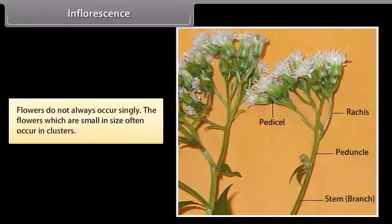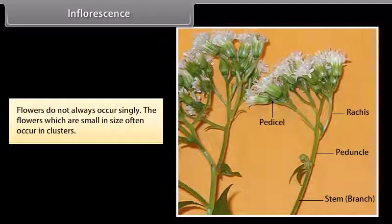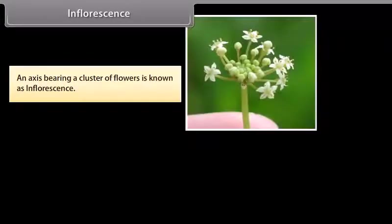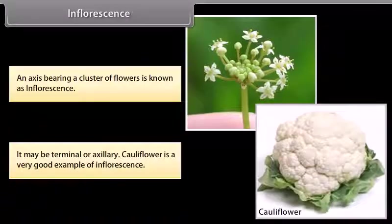Flowers do not always occur singly. Flowers which are small in size often occur in clusters. An axis bearing a cluster of flowers is known as inflorescence. It may be terminal or axillary. Cauliflower is a very good example of inflorescence.